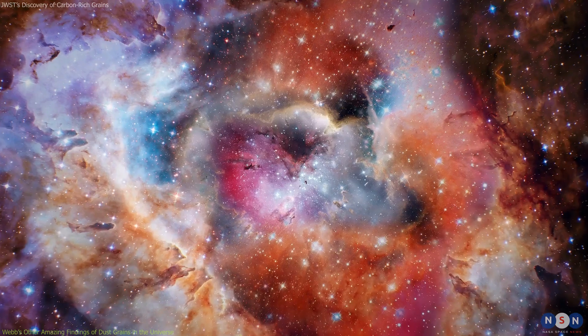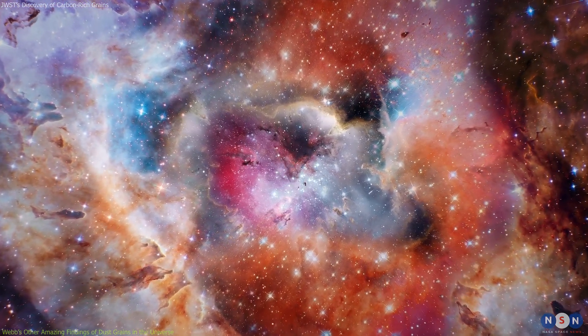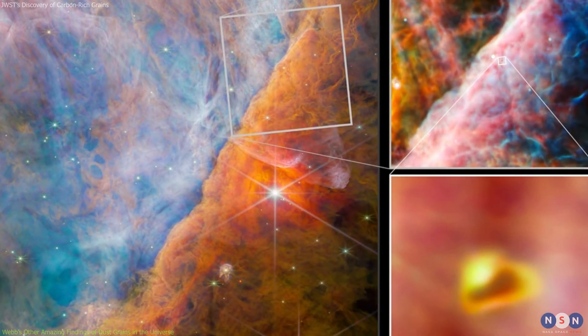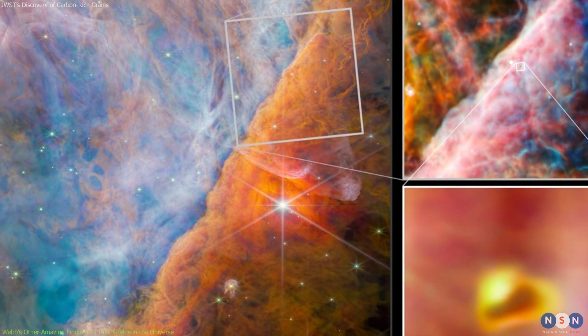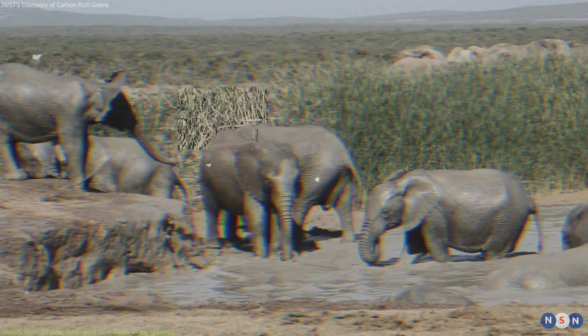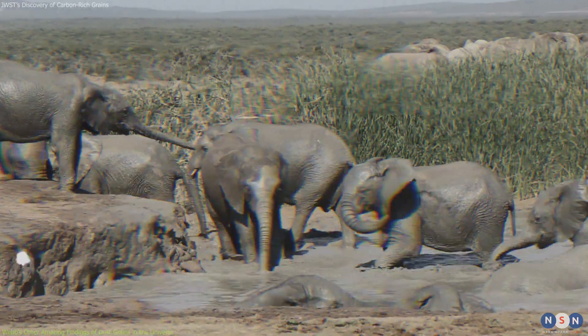The researchers used NIRSpec to measure the spectrum of the Orion Nebula and found that it has a distinctive emission feature at a wavelength of 5.8 micrometers, which corresponds to methyl cation. This is the first time that methyl cation has been detected in space with such high sensitivity and resolution. The researchers estimated that there are about 10 to the power of 15 grams of methyl cation in the Orion Nebula, which is equivalent to the mass of 10 to the power of 9 elephants.